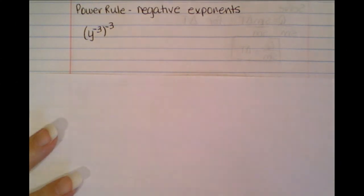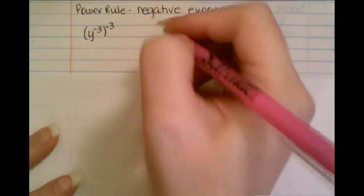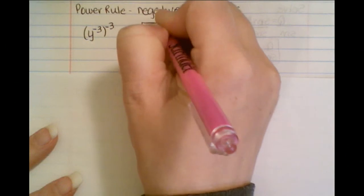So remember, our power rule says we're going to multiply these two numbers together. So what is negative 3 times negative 3? Well, it's 9, so this is just going to be y to the 9th.